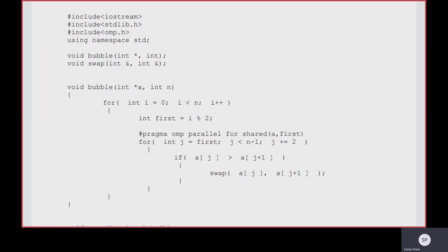#pragma omp parallel for shared(a) means the array will be shared among the number of threads created by the master thread after calling the fork system call. The variable first is also shared among these different threads. From the #pragma omp parallel statement onward, parallel execution will start, and that is limited to the for loop only, since this is #pragma omp parallel for.